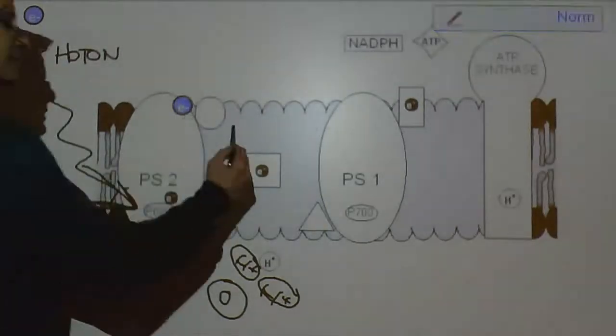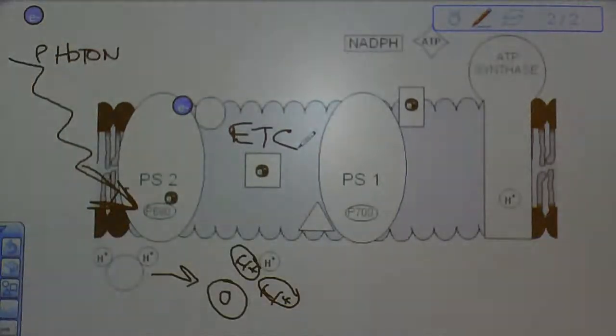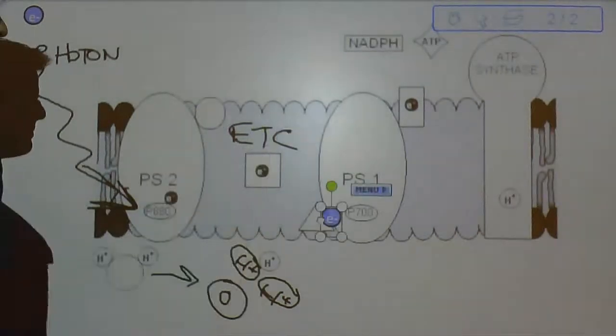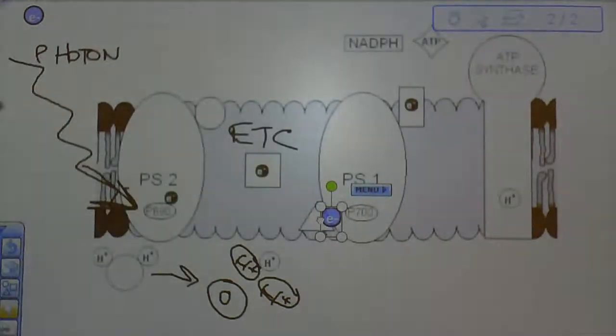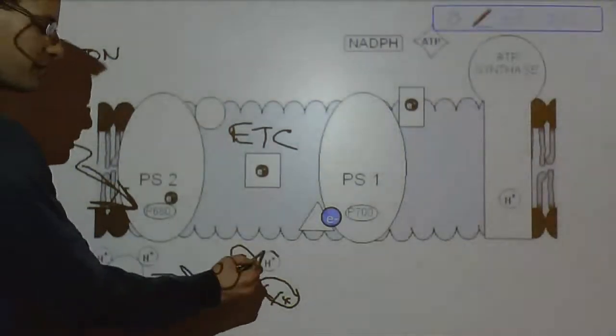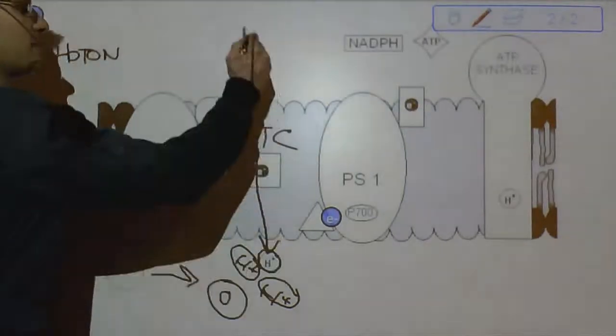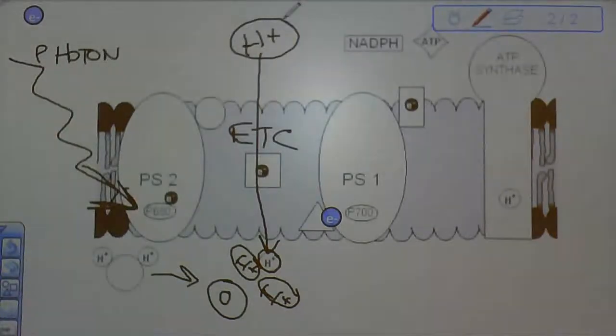The next step is electron transport chain. And that's what these three guys are for. Three shapes to represent three different proteins that we don't need to know the names of. Passing the electrons from protein to protein to protein. You'll see that electron is moving down to represent it actually losing energy.